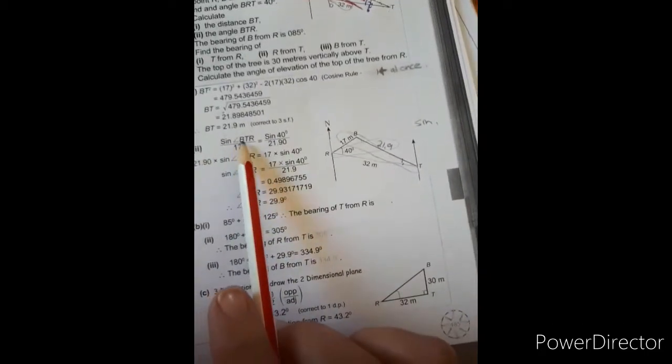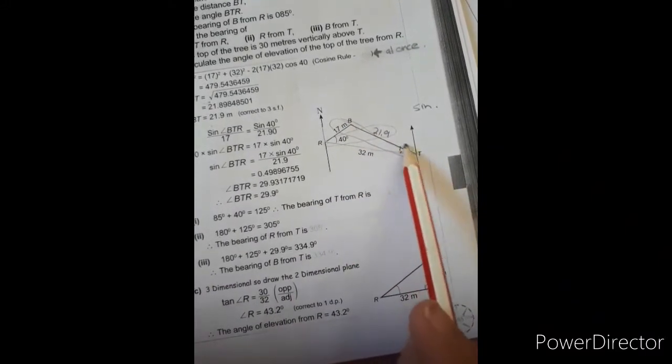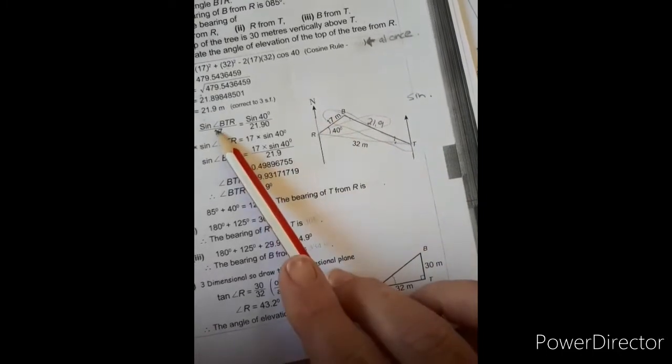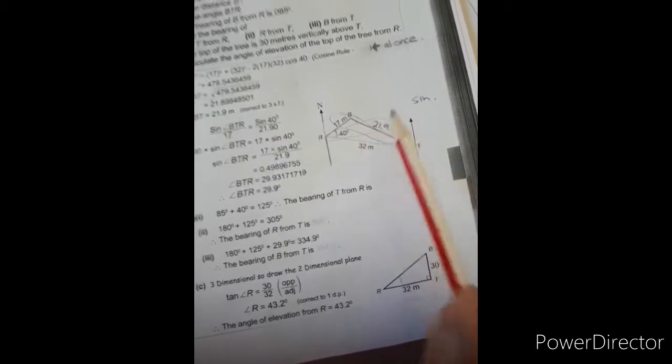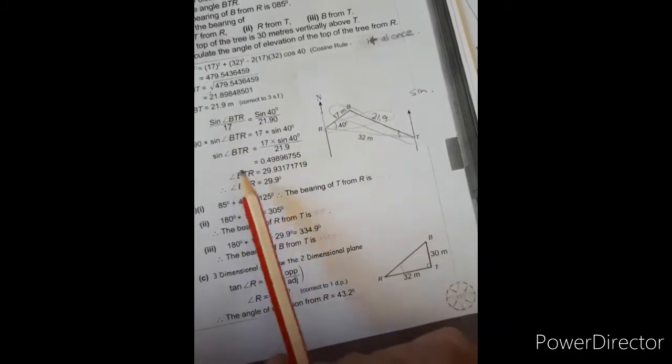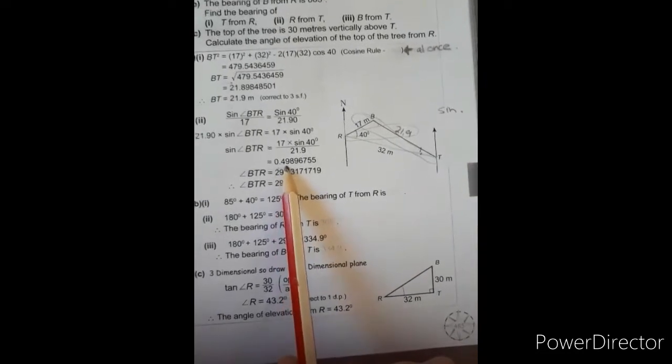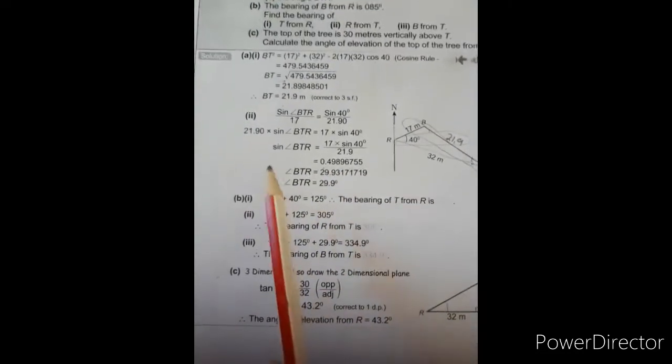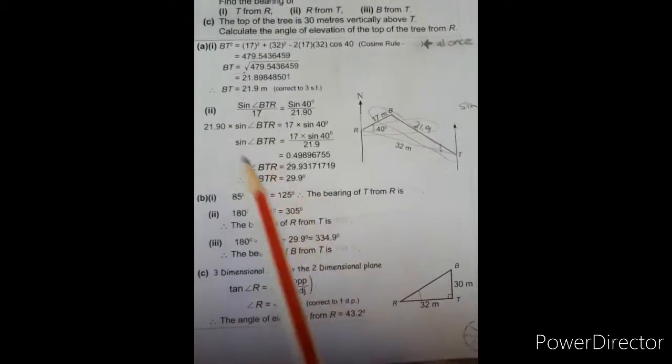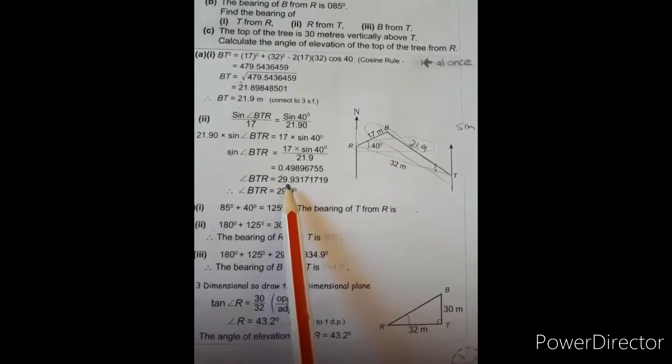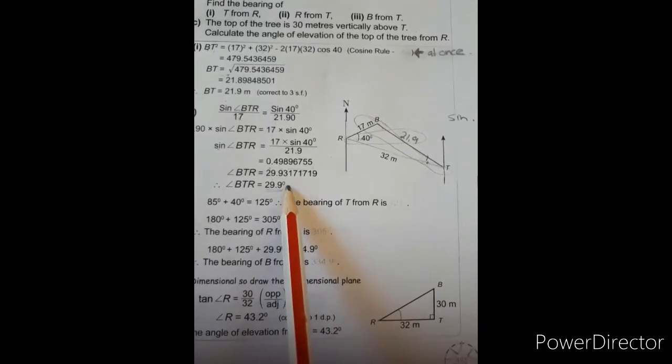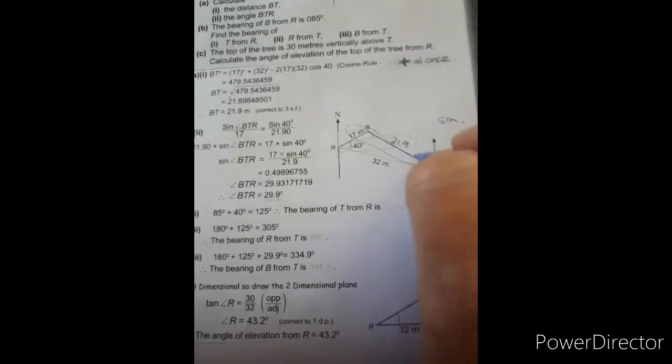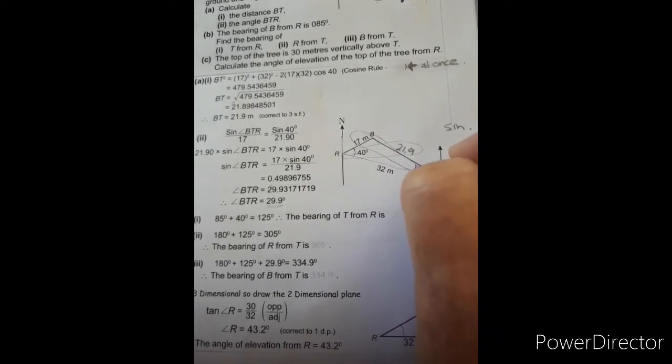So we have sine of BTR. Remember, we always put the question mark at the top, over 17, equals the sine of 40 over 21.9. And then we have cross multiplication. We get the sine of BTR being 0.49896788. And then remember, use second function or shift sine to get the angle. So this angle is then 29.93, which we're going to round to one decimal place because it's an angle, which gives me 29.9 degrees.